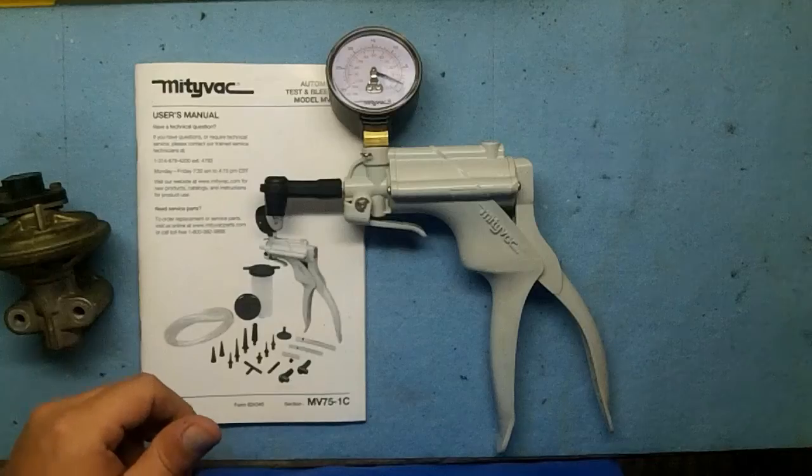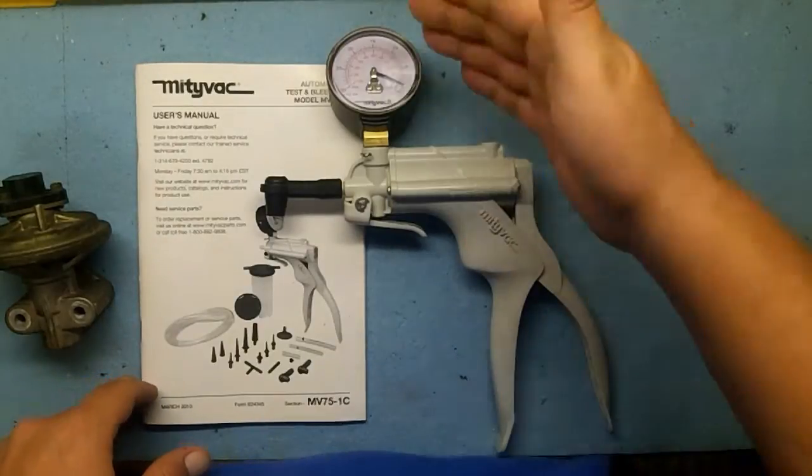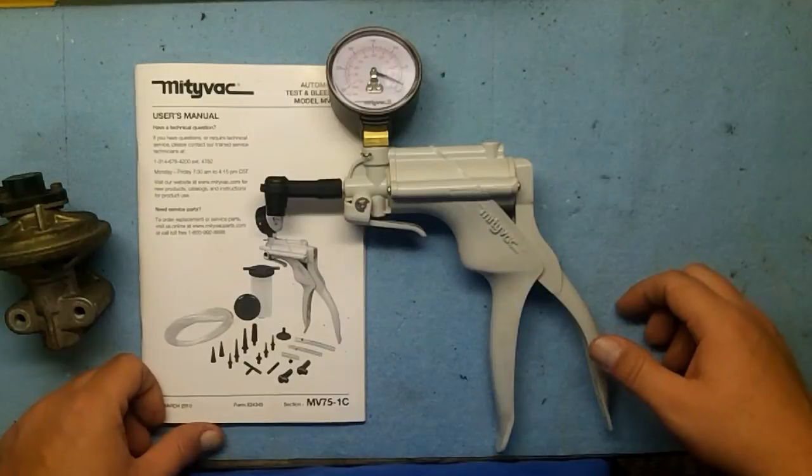Hopefully that tip has helped some of you who are trying to decide whether to get a vacuum gauge or vacuum pump. Just get one—it does both. Hope that tip has helped you.